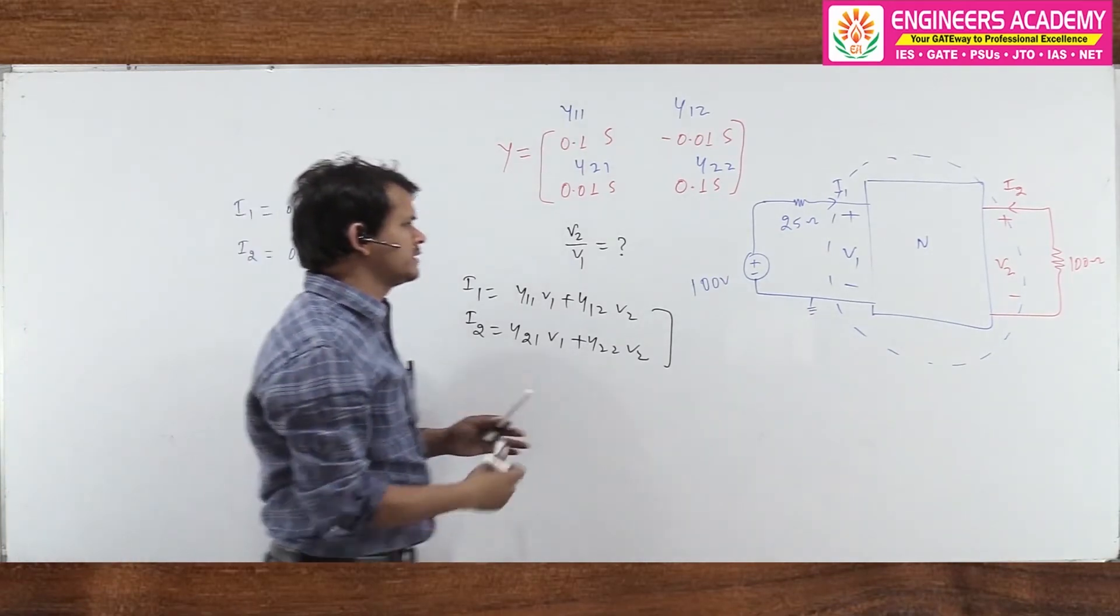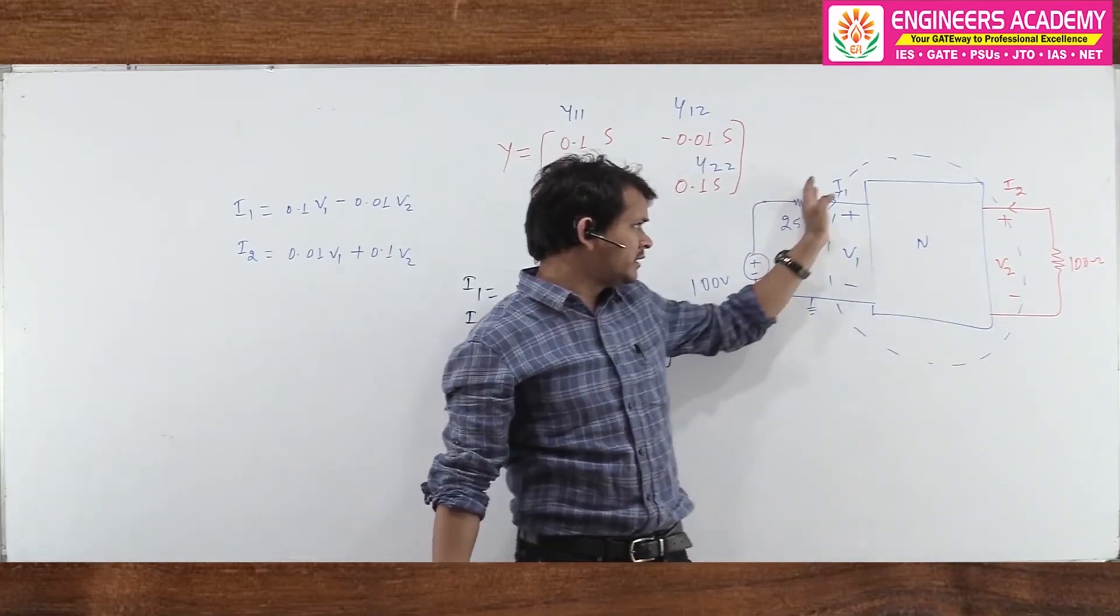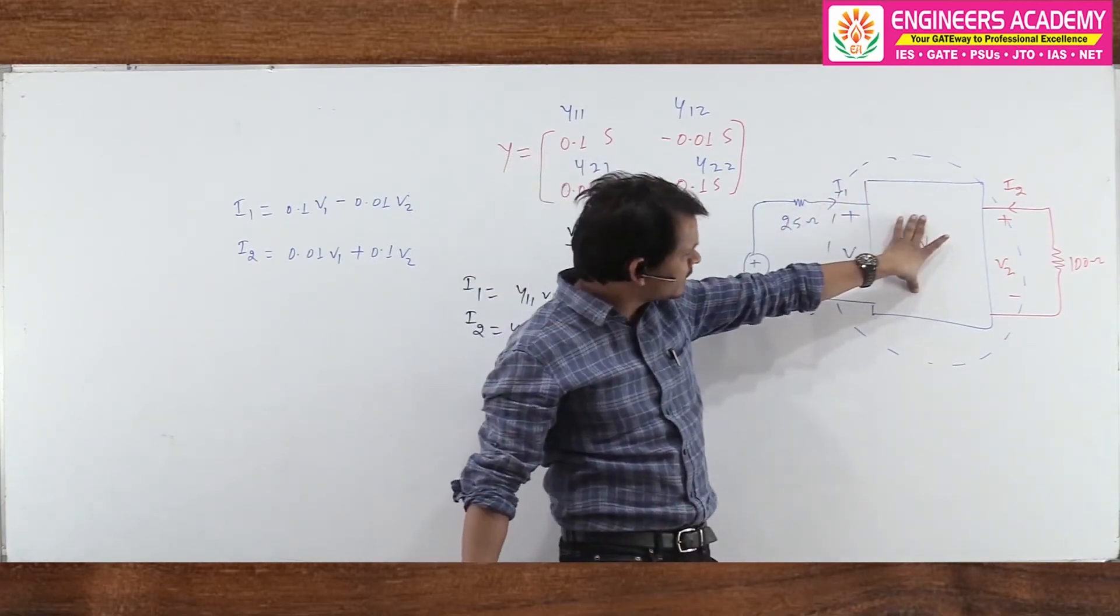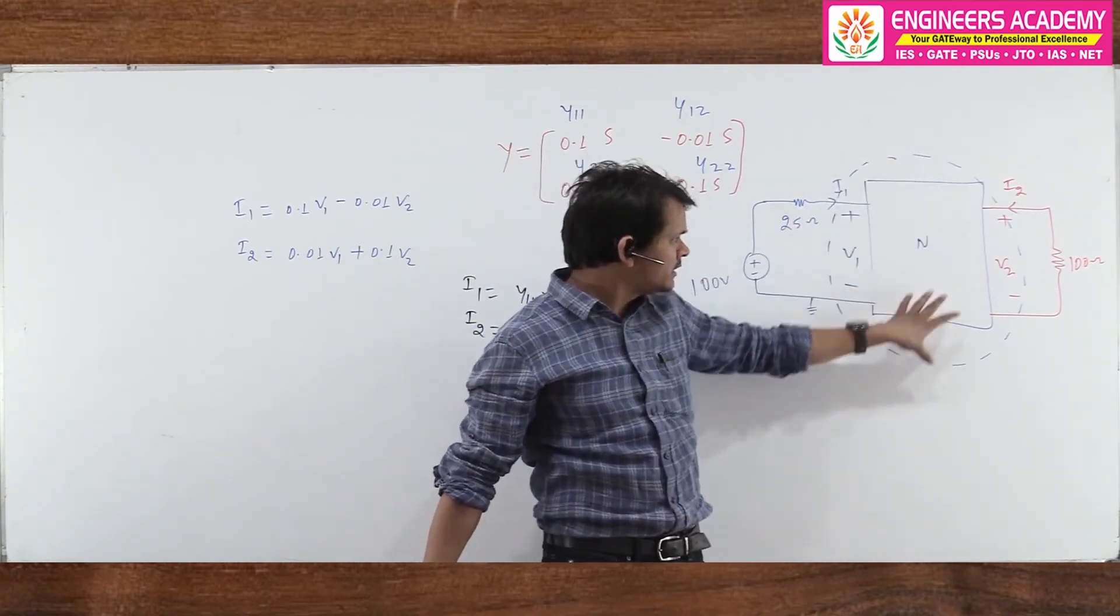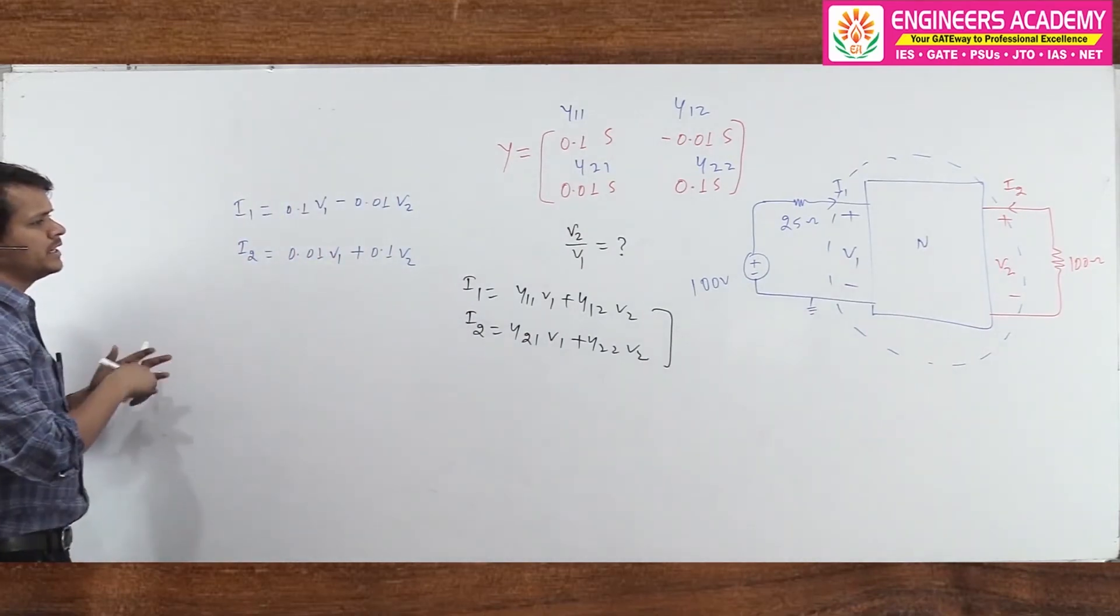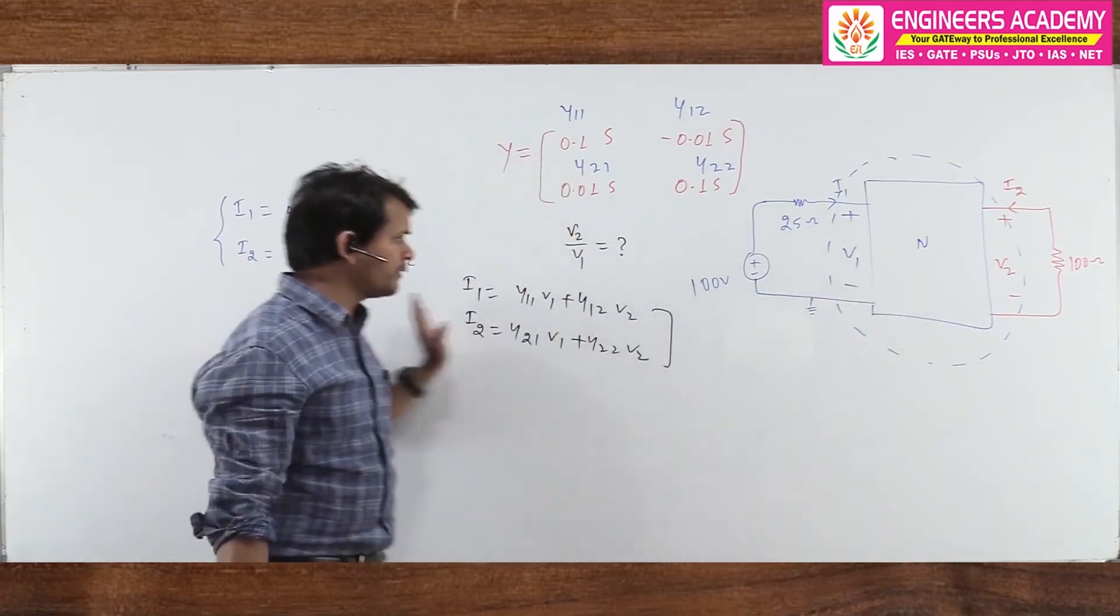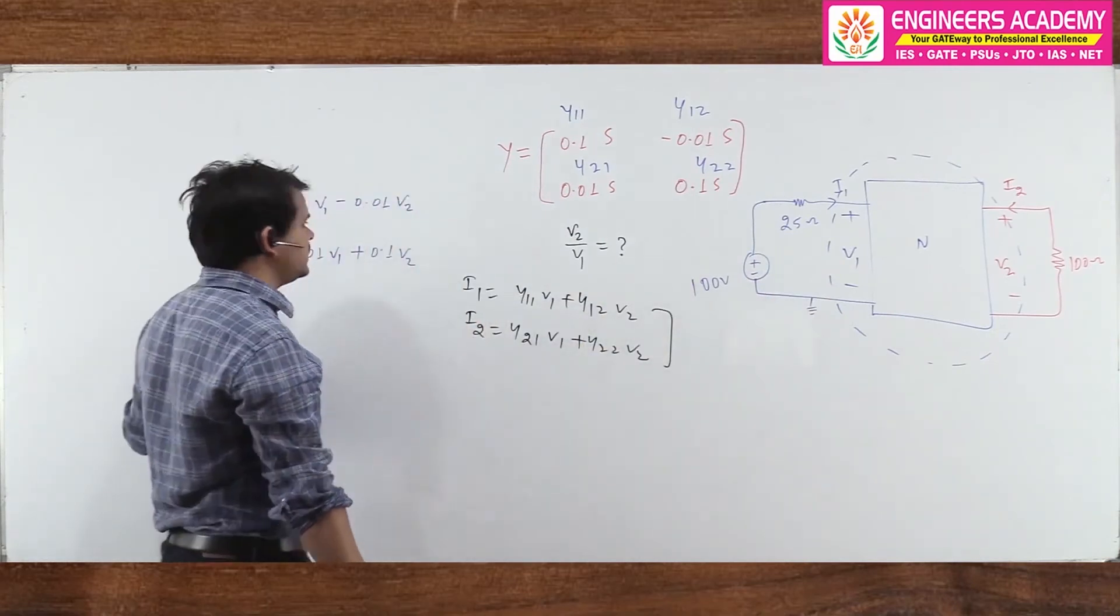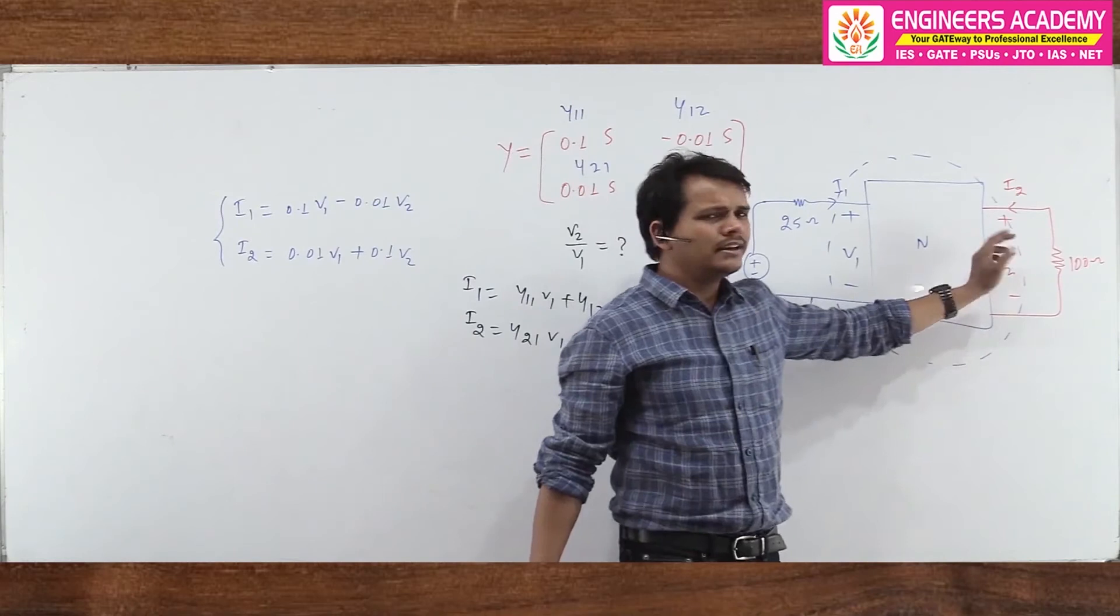I write two equations. These two equations mathematically represent this circuit. This circuit or this network, I can mathematically represent with these two equations. I represent this network with the help of these mathematical equations. We can represent this network with these two mathematical equations.